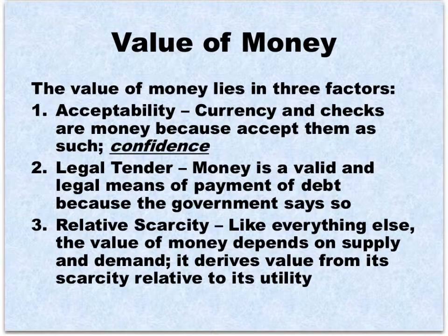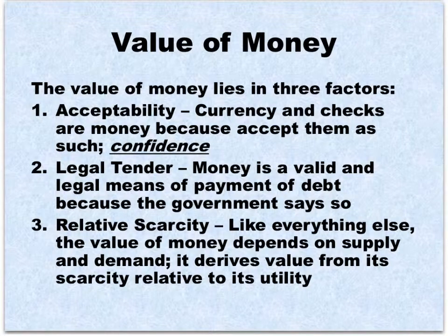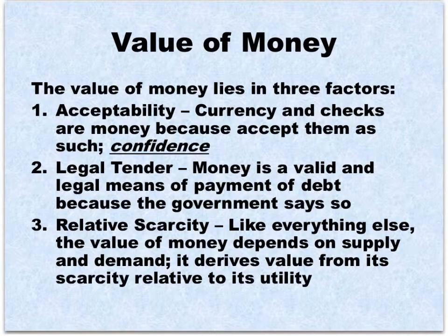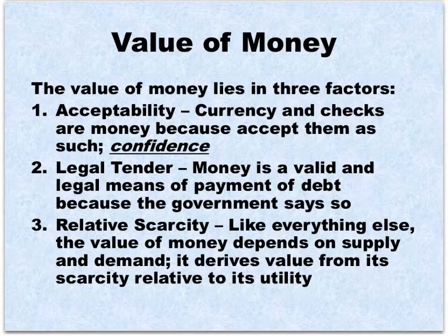From where does money derive its value? If I offer you a dollar, you'll take it — but it's just a piece of paper. Why is it worth a dollar? Several reasons. Number one, acceptability: currency and checks are money because people accept them as such; people have confidence in the currency. Maybe it's a lie that a dollar is worth a dollar, but it's a lie we've all bought into. Secondly, it's legal tender — it says so on the money. It's usable for all debts, public and private, and the government has declared it so. This is fiat money: money that is worth a dollar because the government has declared it by fiat. Number three, money is like anything else — it depends on supply and demand. It derives value from its scarcity relative to its utility. We all want money, and there's a fixed amount of it. That gives it value.